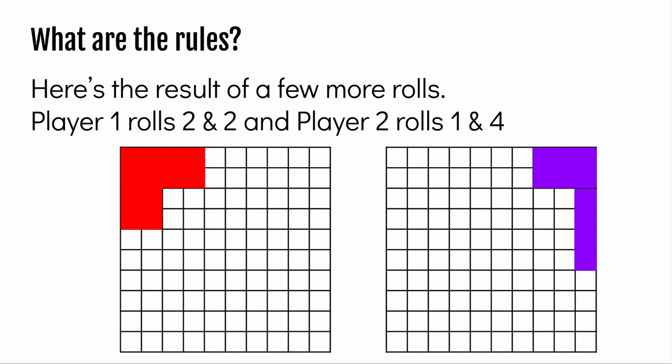Here is the result of more rolls. Player 1 rolls a 2 and a 2 and shades that 4 square. And Player 2 rolls a 1 and a 4, shading that 1 by 4 rectangle.